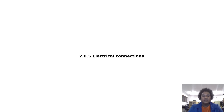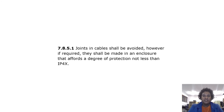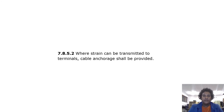Electrical connections — joints in cables: joints in cables shall be avoided; however, if required, they shall be made in an enclosure that affords a degree of protection not less than IP4X. Where strain can be transmitted to terminals, cable anchorage shall be provided.